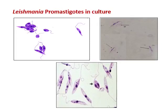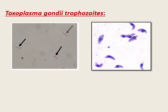When the background is clear with no many cells, we think of Leishmania promastigote in culture. The promastigote is flagellated — it has a nucleus, an anterior kinetoplast, and a flagellum extending outward without an undulating membrane. This is Leishmania promastigote in culture.